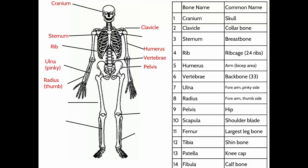Up here — these triangular bones you can feel if you reach behind you — they sort of stick out. You might call it your shoulder blade; the anatomical name is the scapula. It connects with your collarbone to form your shoulder joint.